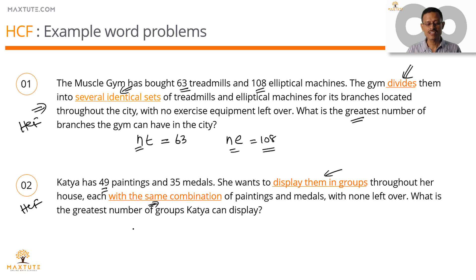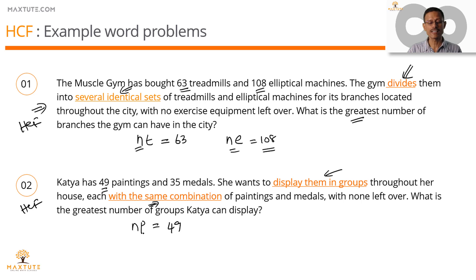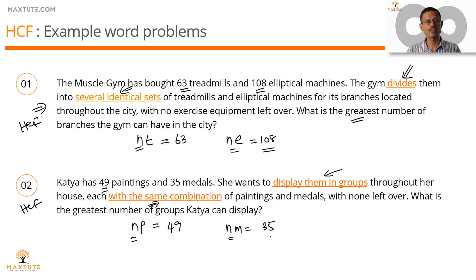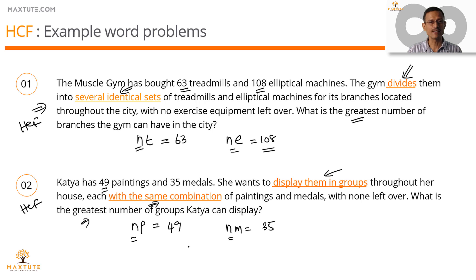Let's create the framework. Let the number of groups be n. Each group will have p paintings, so n × p = 49. Similarly, n groups each having m medals will give n × m = 35. So n is a factor of 49 and n is a factor of 35 — n is a common factor of both 49 and 35. The greatest number of groups is what we need to find, so we want the maximum n, which is the HCF of 49 and 35.